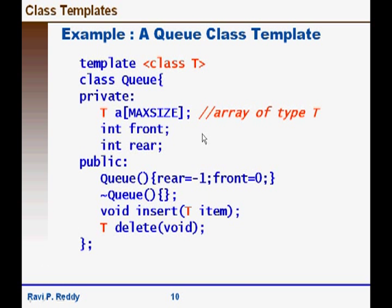Similarly we can write a queue class template where we take an unknown type T and we write the complete code using an array based implementation. The insert takes an item of type T. The delete function deletes a value and returns the value and we can do that.